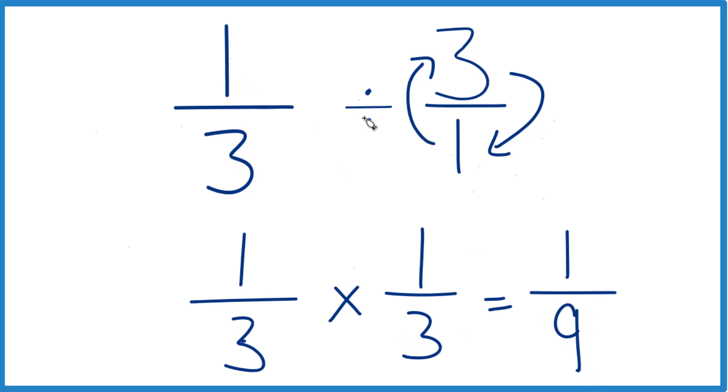So one-third divided by three, or one-third times one-third, that gives us one-ninth.